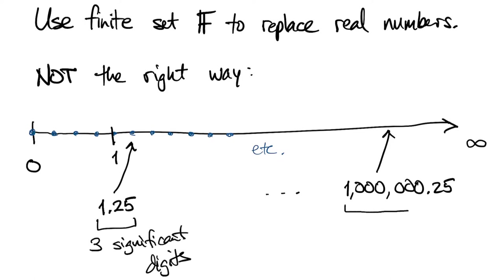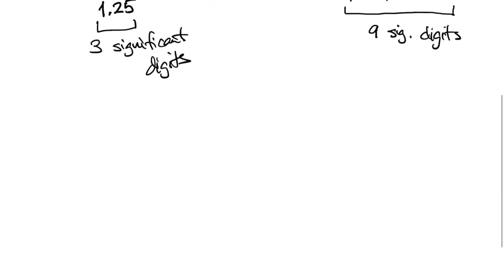Well, 1.25 only has three significant digits in it, whereas a million.25 has nine significant digits, and that means we would be representing large numbers much more accurately than smaller numbers, which is usually not something that we want.